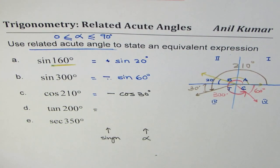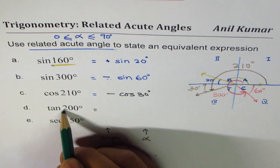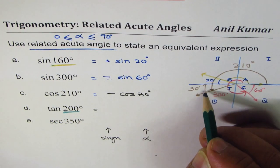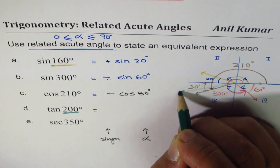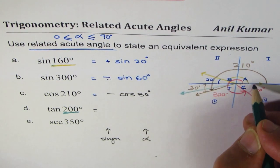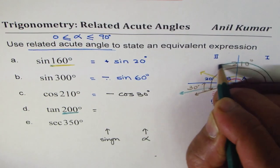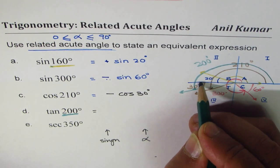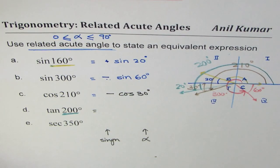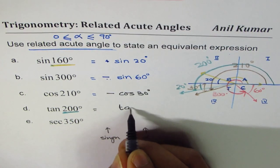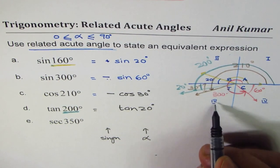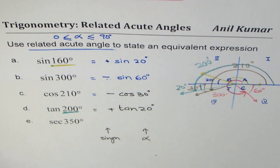Next is tan of 200 degrees. 200 is slightly more than 180, so the terminal arm is in quadrant three, slightly past 180. The acute angle is 200 minus 180 = 20 degrees. Tan is positive in quadrant three, so we write positive. Therefore, tan 200 degrees equals positive tan 20 degrees.